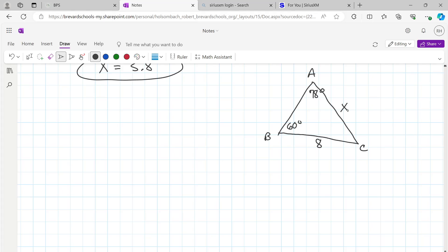All right, so this is another straightforward problem. We've got an angle measure and its opposite side, and we have an angle measure and the side opposite it we're trying to solve. So write the proportion: sine 78 over 8 equals sine 60 over x.